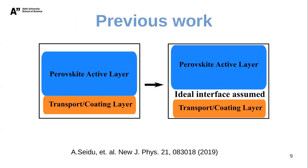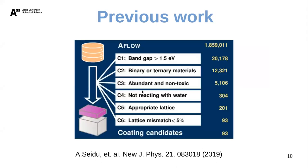In my previous work, we set out to look for inorganic coating materials that also serve as transport materials. We assumed a perfect interface where interactions between the perovskite and the transport or coating material are perfect — we didn't consider what happens within the surface. We did a database search using the AFLOW database, which at the time had almost 2 million entries, and set criteria to select potential coating materials that can also serve as conducting layers for the perovskite.